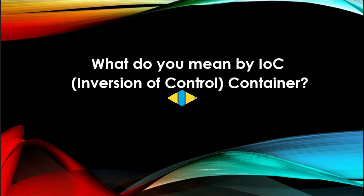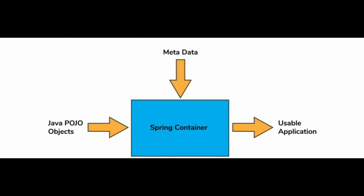What do you mean by IoC container? The Spring container forms the core of Spring Framework. The Spring container uses dependency injection for managing the application components by creating objects, wiring them together, and configuring and managing their overall life cycles. The instructions for the Spring container to do tasks can be provided either by XML configuration, Java annotations, or Java code.